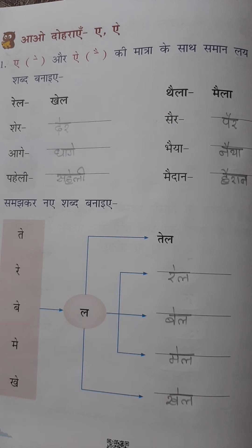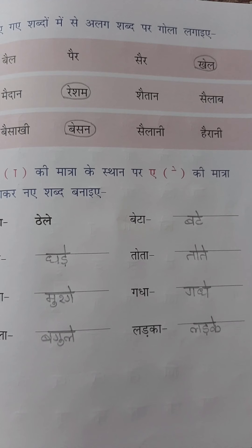Shabd banaiye: Tel, Rail, Bail, Mail and Kheel. In the next page, third one you can see, Alag shabd par gola lagaye — very simple, just circle the odd one out. Bail, Pair, Sair and Kheel.